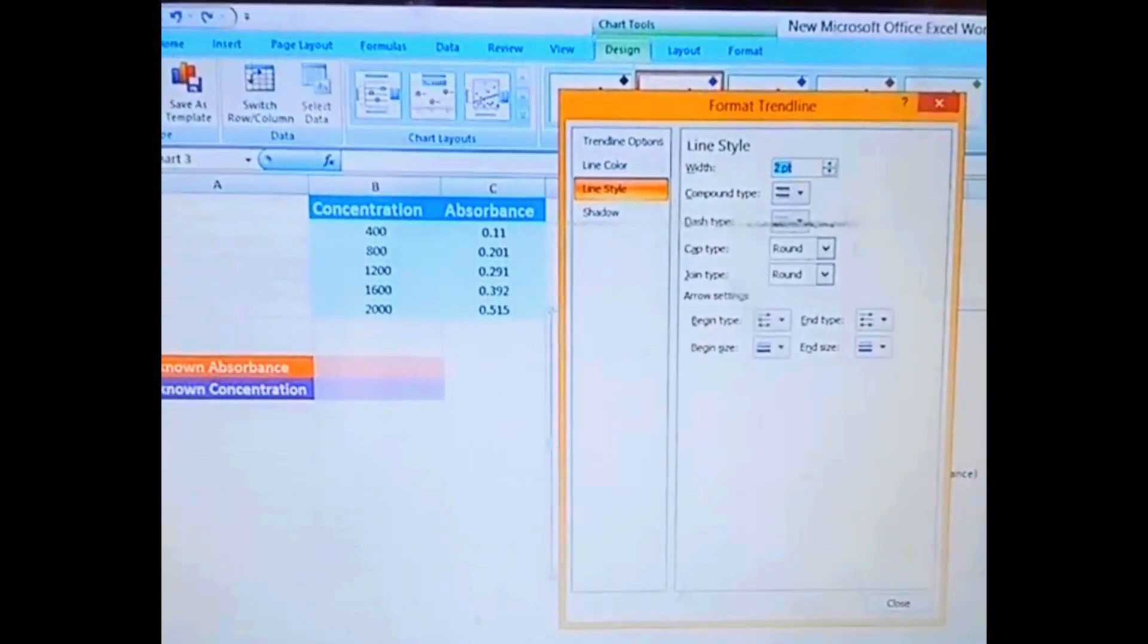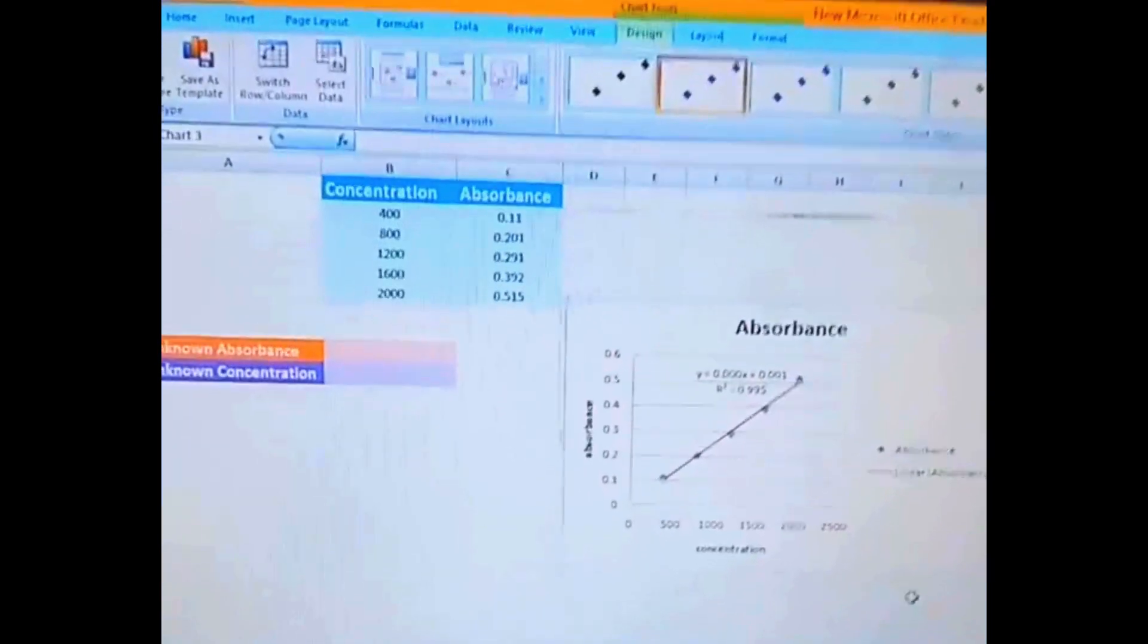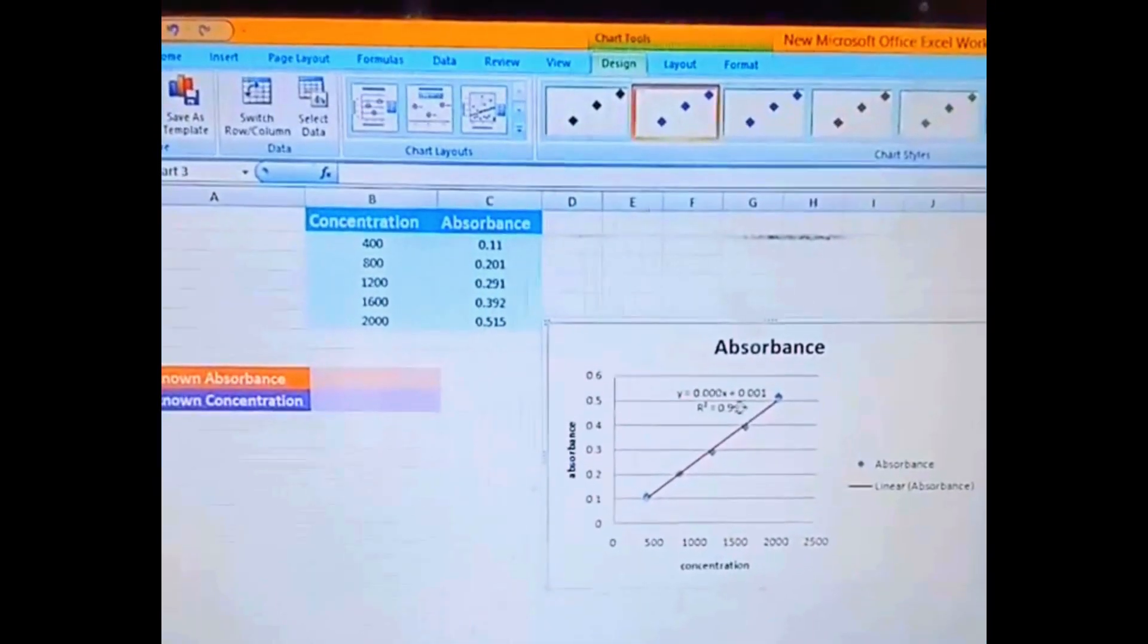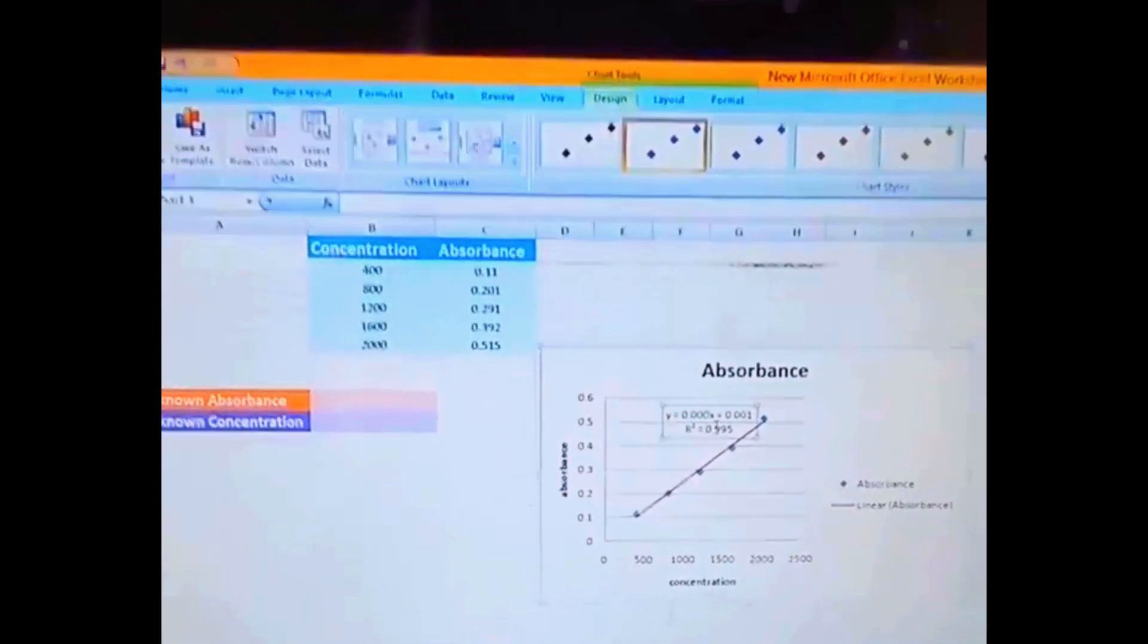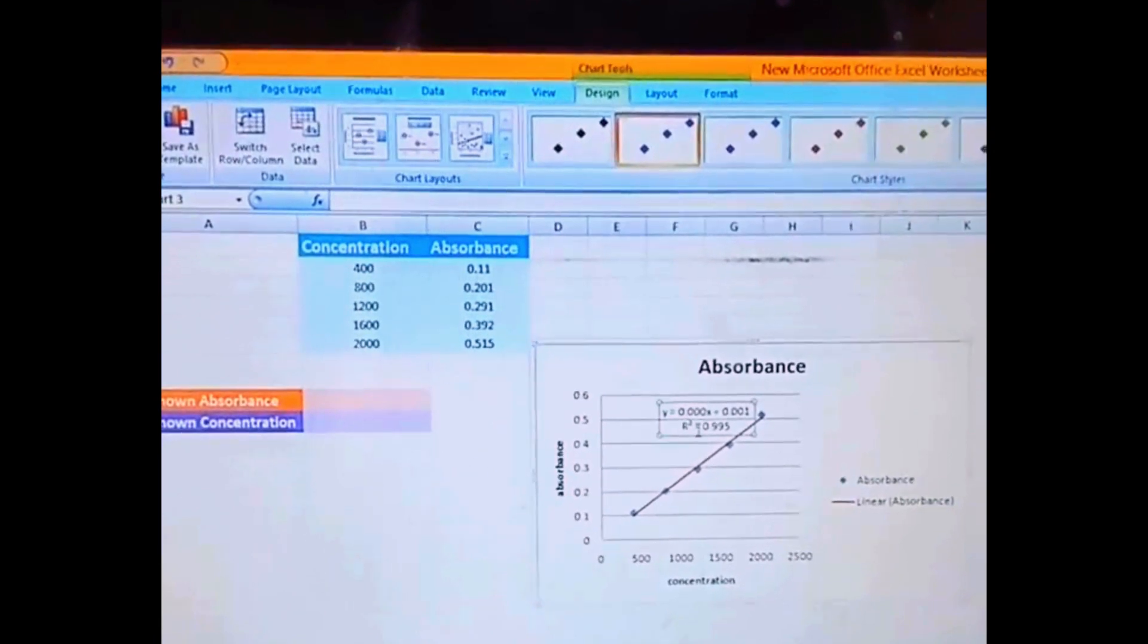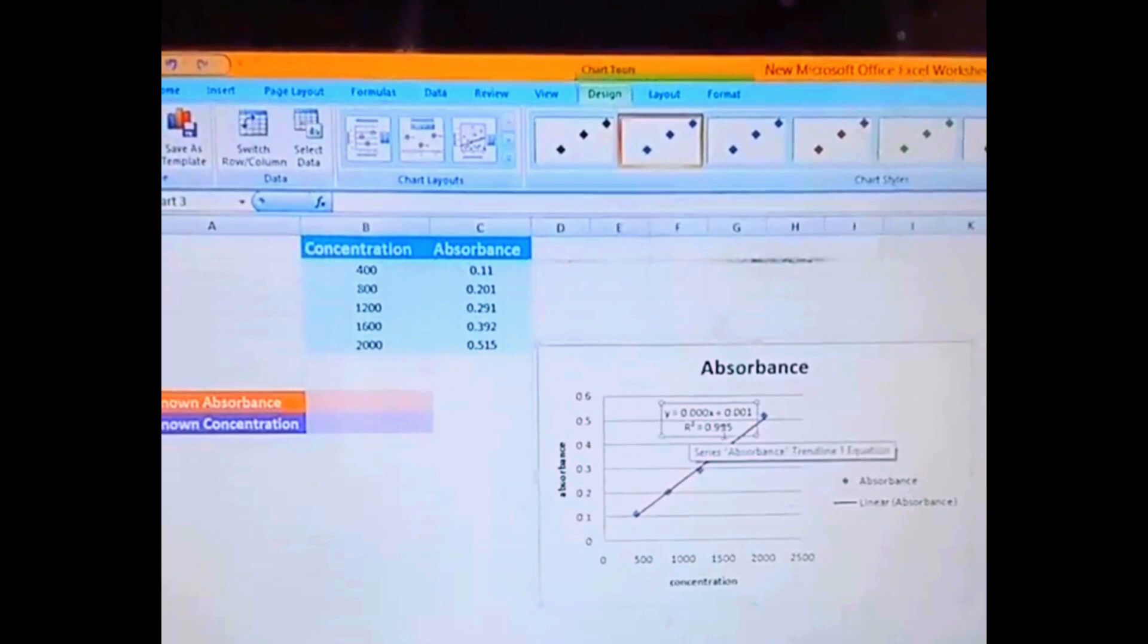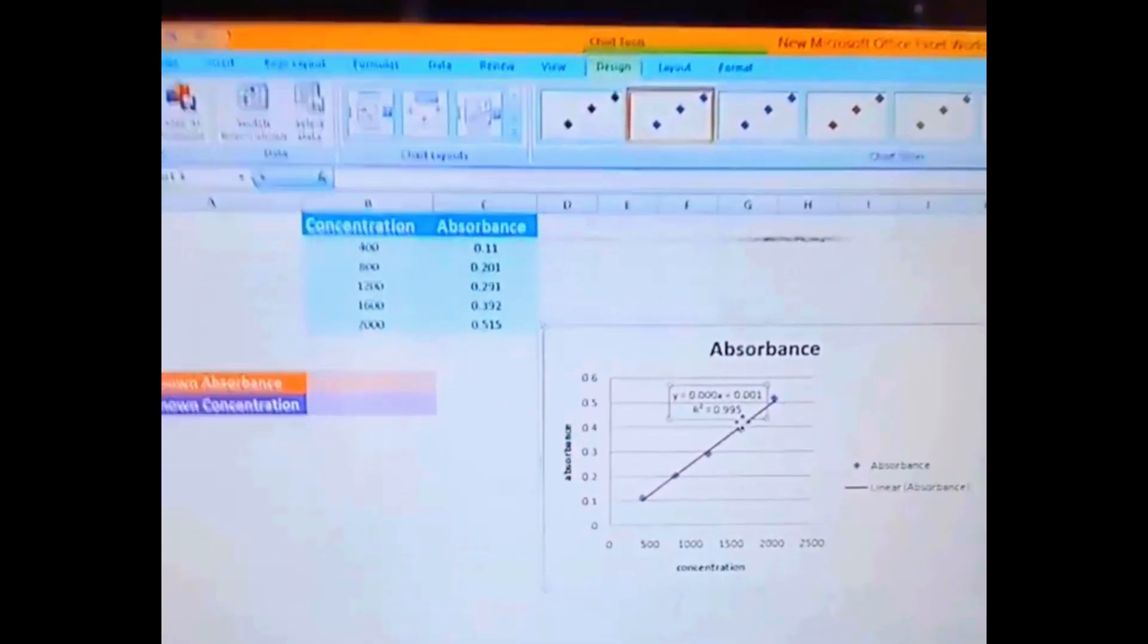Here we can pick our width and whatever thing by which we want to represent our data. So here is the trendline, here is the formula, and here is also the R-square value, that is 0.995.